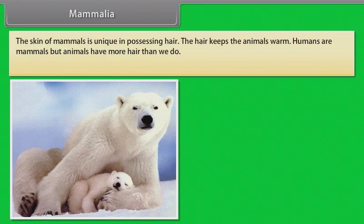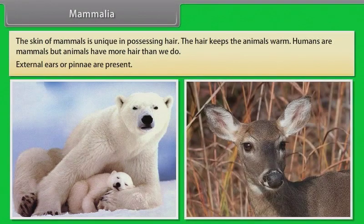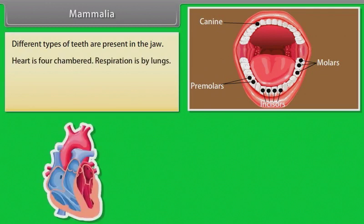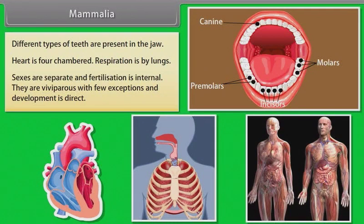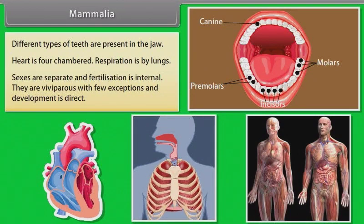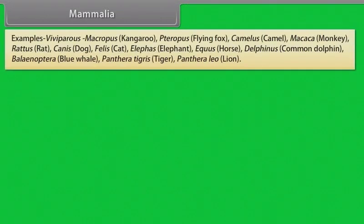Humans are mammals but other animals have more hair than we do. External ears or pinnae are present. Different types of teeth are present in the jaw. Heart is four-chambered. Respiration is by lungs. Sexes are separate and fertilization is internal. They are viviparous with few exceptions and development is direct.